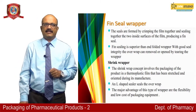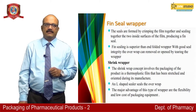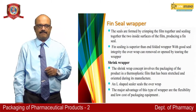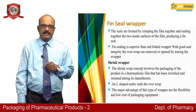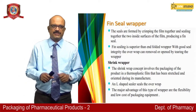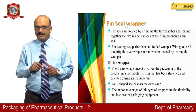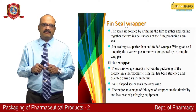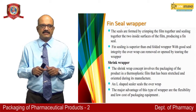The fin seal is superior to an unfolded wrapper with good seal integrity, and the overwrap can be removed by tearing. The shrink wrapper concept involves packaging the product in a thermoplastic film that has been stretched and oriented during manufacture. An L-shaped sealer seals the overwrap. The major advantages of this wrapper type are flexibility and low cost of packaging equipment.